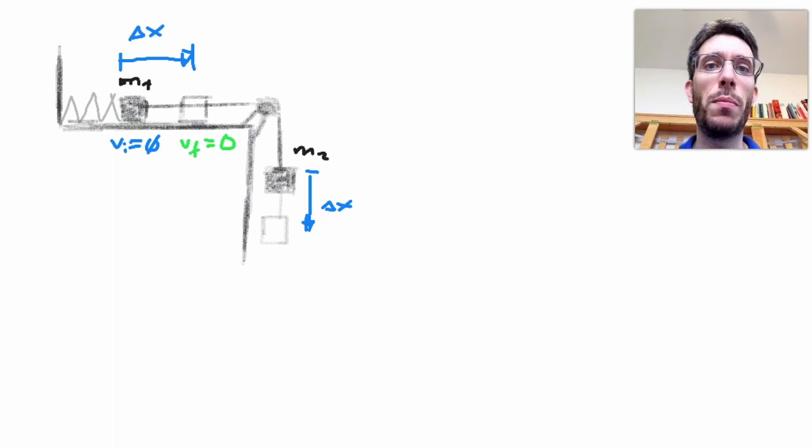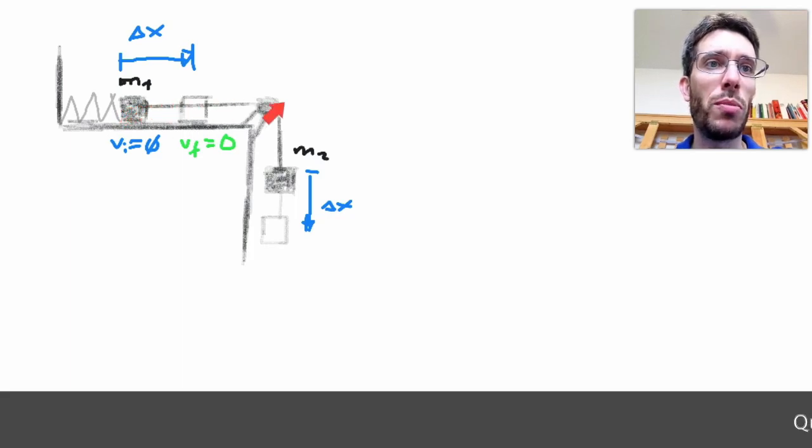In this video I'm going to do an example of how to solve a problem using conservation of energy. We have a block of mass 1 attached to a spring. Then we have the block connected with a cable over a frictionless pulley to a block of mass M2 which is hanging here.